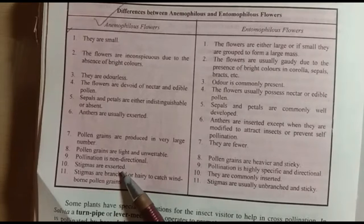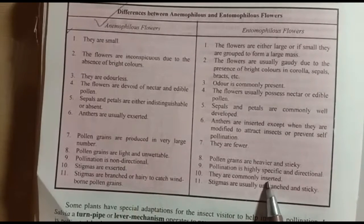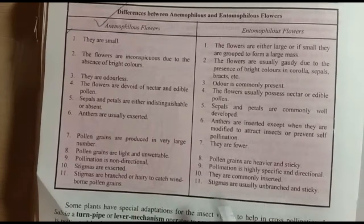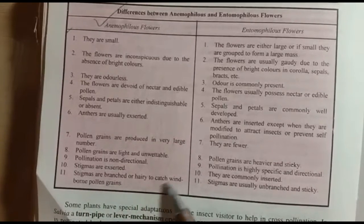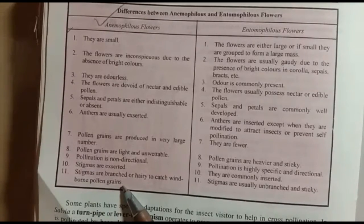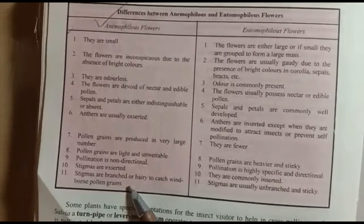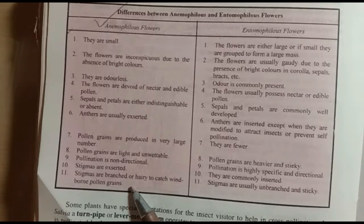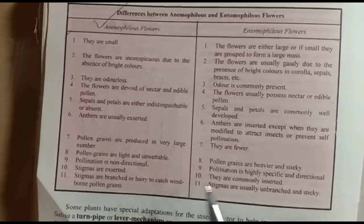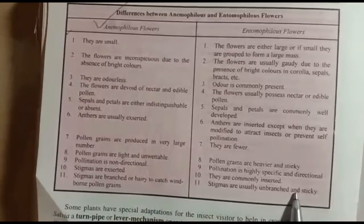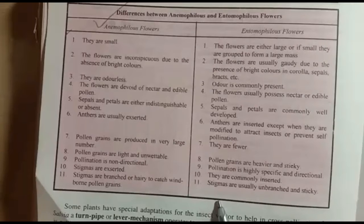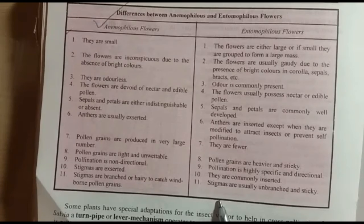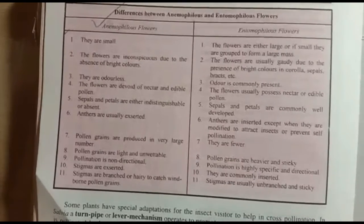In anemophilous flowers, stigmas are exerted and branched and hairy to catch wind-borne pollen grains, as they are dependent only on wind. In entomophilous flowers, the stigma is usually unbranched and sticky, but small, since insect-directed pollination is sufficient. That is enough for today's class.